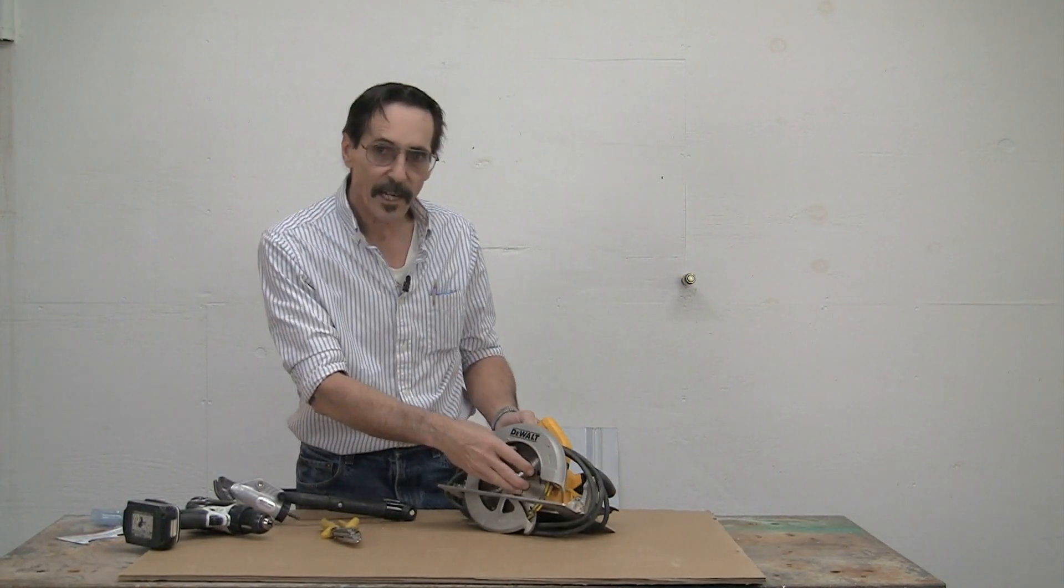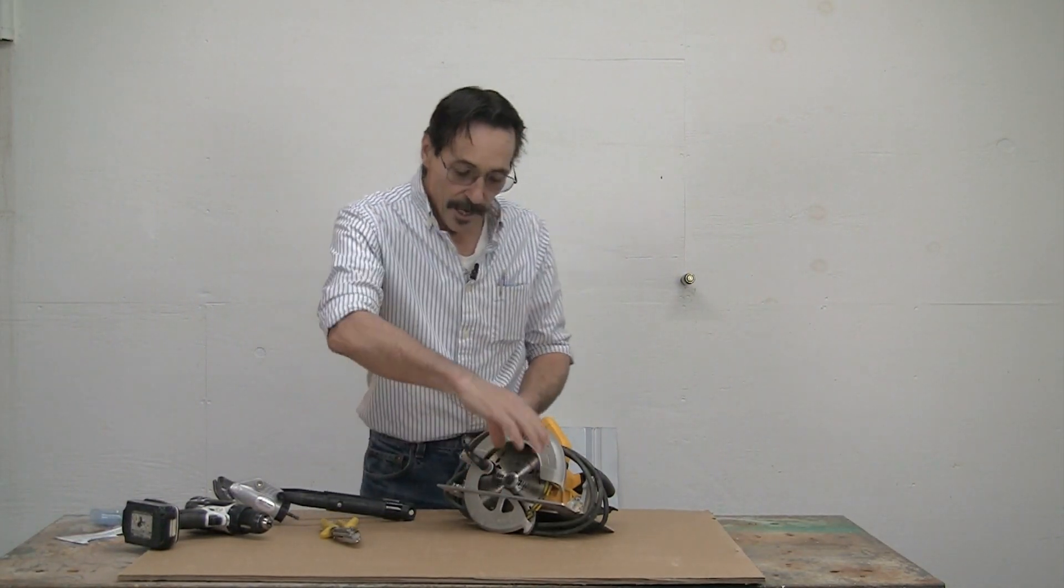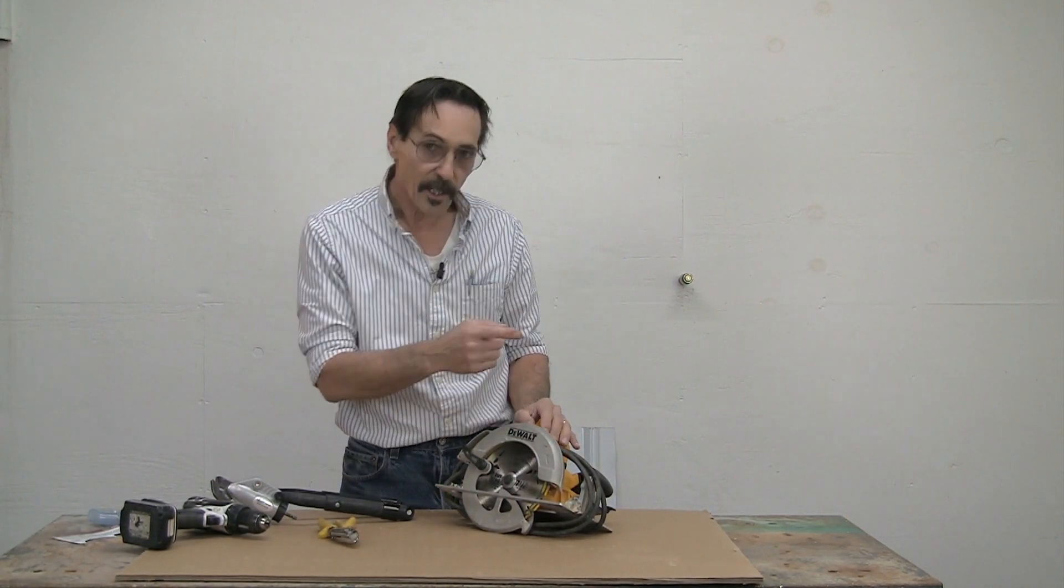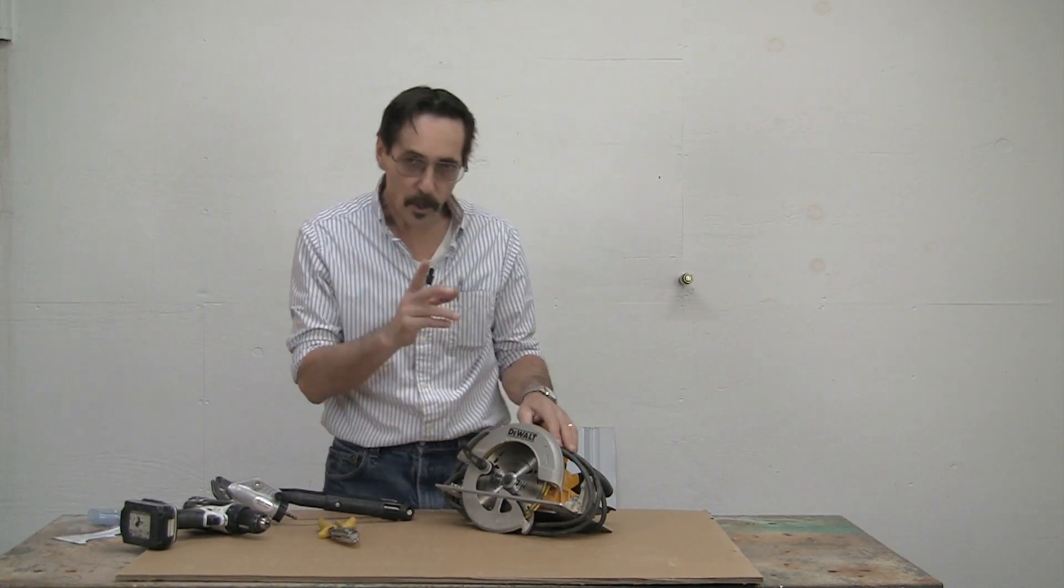He's taking like an old paneling blade or plywood blade, and you turn it around backwards, and you can cut sheet metal that way. That's one way to do it.